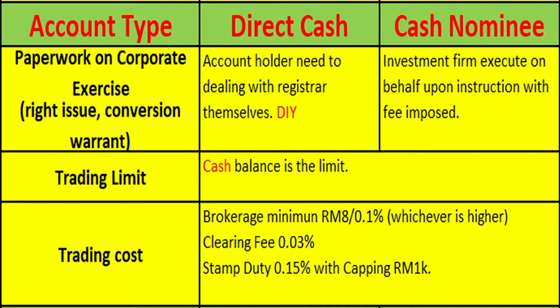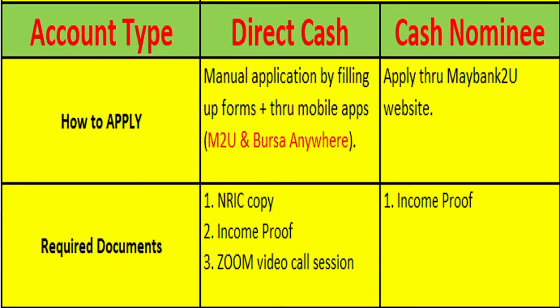In terms of trading limits, both account types are the same — the cash balance is the limit. If you have 10,000 ringgit in the account, you can trade up to 10,000 ringgit. The brokerage fee is a minimum of 8 ringgit or 0.1%, whichever is higher. Clearing fee by Bursa is 0.03%, and stamp duty by the government is 0.15%, with a capping of 1,000 ringgit.